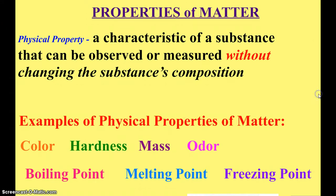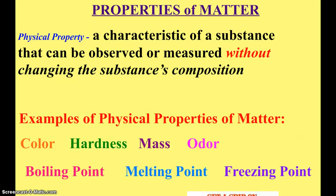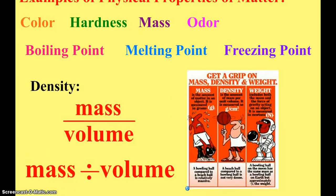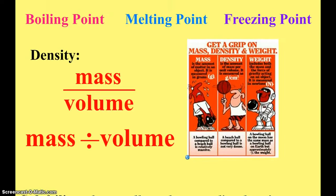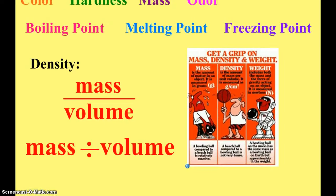We have some examples of those listed: all the different points — boiling point, melting point, freezing point — color, hardness, odor, mass, volume, etc. Density is also a physical property of matter. You take the mass of the object divided by the volume of the object, and it gives you a number — that is its density.